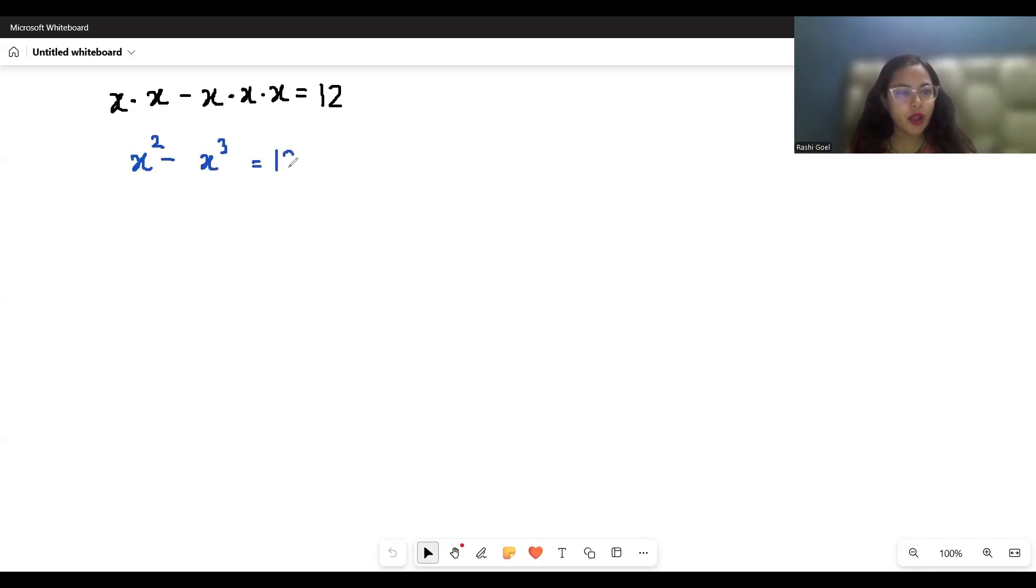Equal to 12. Now we can rewrite this as x cubed minus x squared plus 12 equals 0. The equation becomes, if we rearrange it, now factor out and test small factors of 12 like 1, 2, 3.